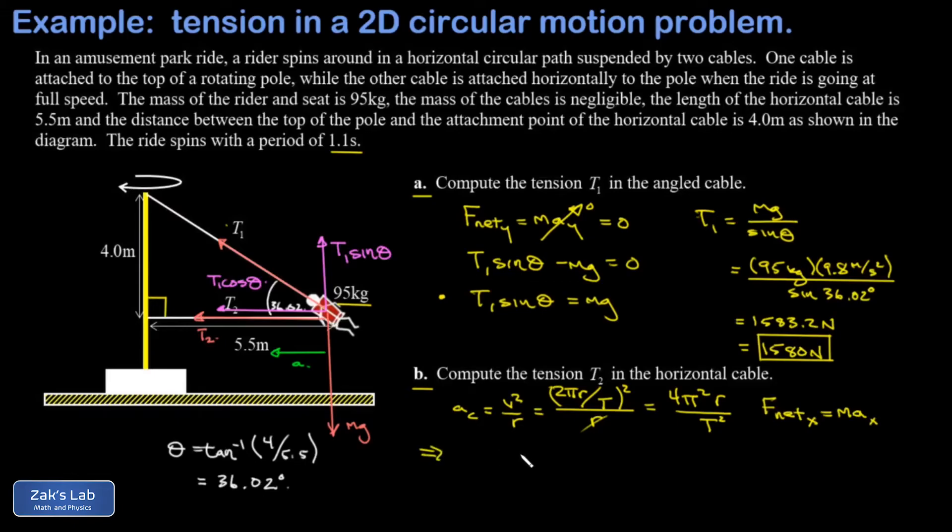The net force in the x direction is T1 cosine theta plus T2. Those are cooperating, both pointing toward the center of curvature. That equals the mass of the object times this acceleration, which is 4π squared r over T squared.